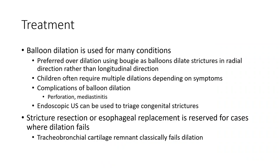For treatment, balloon dilation is used for many conditions. It is preferred over dilation using bougies, as balloon dilation dilates the stricture in a radial direction rather than a longitudinal direction. Children often require multiple dilations depending on symptoms. Endoscopic ultrasound can be used to assess congenital strictures. Stricture resection with esophageal replacement is reserved for cases where dilation fails, such as clinically failed dilation in tracheobronchial cartilage remnant strictures. Thank you.